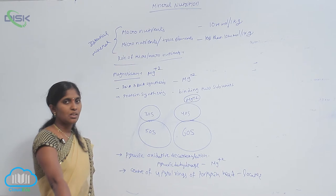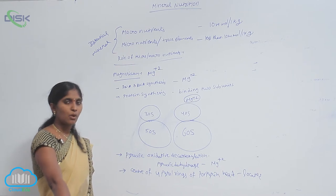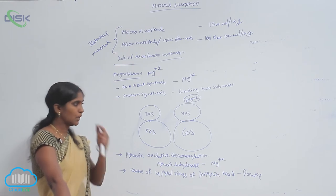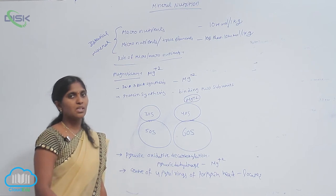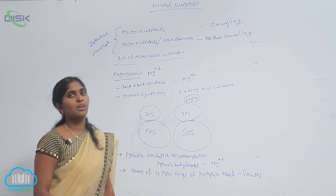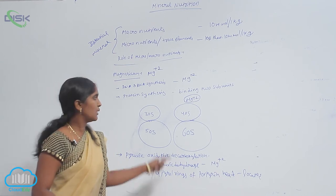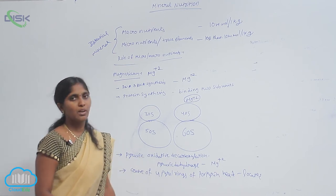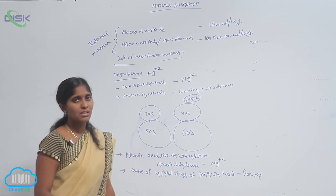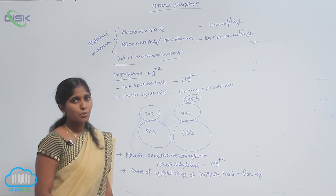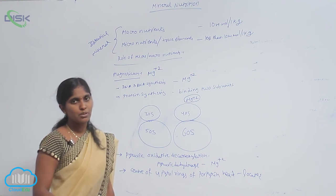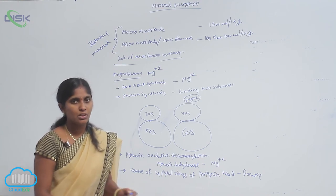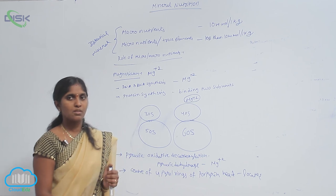These are found in the cytoplasm separately, but during the photosynthesis they are joined by Mg2+ ions. This means the ribosome structure is maintained with the help of Mg2+ during the photosynthesis.